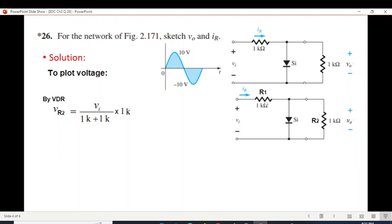And now by VDR, we know the voltage will be across these two, we just discussed. So VR2, the voltage across R2 on this circuit will be input VI divided by these two resistances multiplied by this resistance across which we are trying to find. So that means it is 1 divided by 2, that means it will be half. So VR2 will be 0.5 of VI.